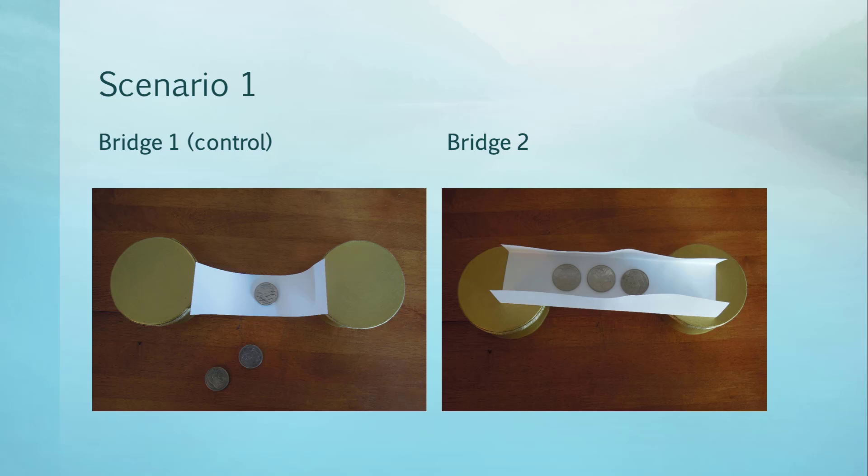Bridge 1 is the control and bridge 2 is the one which has had the independent variable applied to it. Do you see how its sides are folded up?